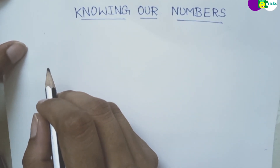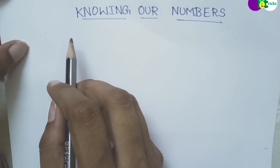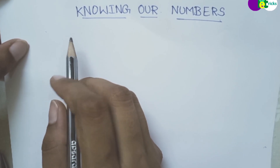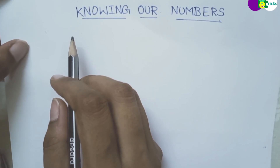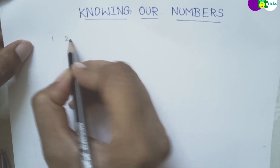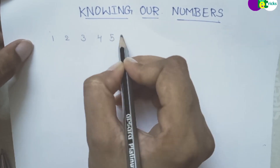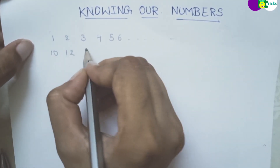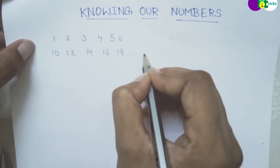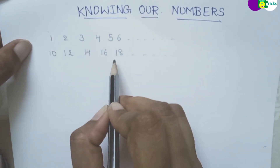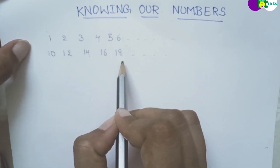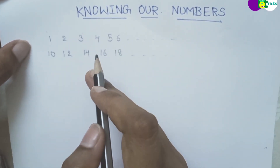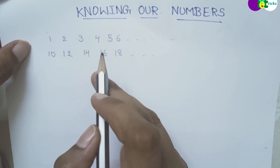Hello friends, welcome back to Math. Here we are going to discuss the topic 'Knowing Our Numbers' — numbers, values, place values, and how to compare numbers. We will discuss all of these. Numbers like 1, 2, 3, 4, 5, 6 and so on, 10, 12, 14, 16, 18 and so on are all numbers. In numbers we have different types of places.